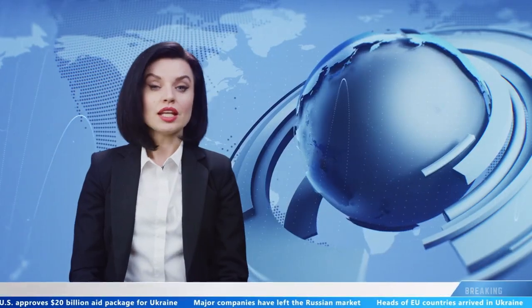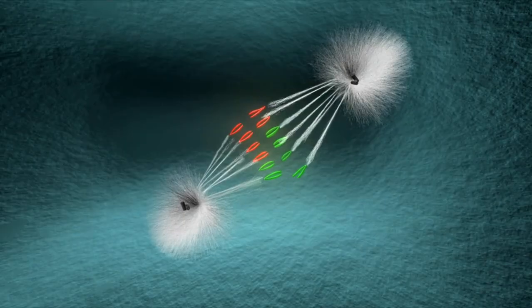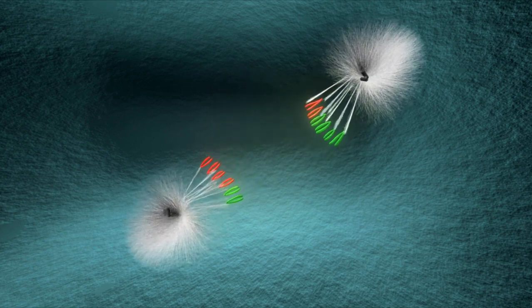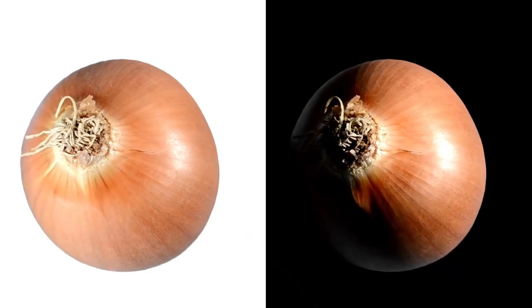All the available evidence strongly suggested that Betelgeuse had undergone an immense and unprecedented event known as a surface mass ejection, SME. This phenomenon bears similarities to coronal mass ejections, CMEs, observed on the sun. To better comprehend an SME, imagine a volcanic eruption on a scale matching that of a star.